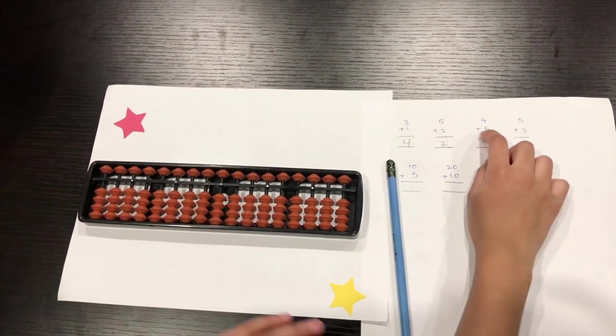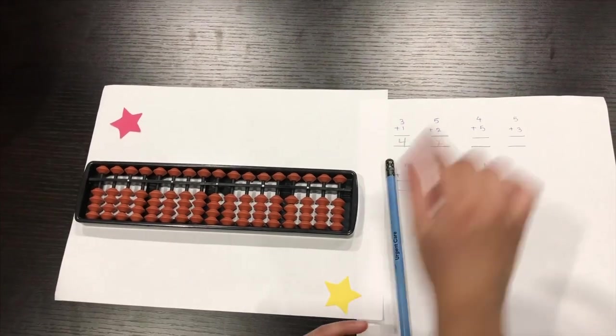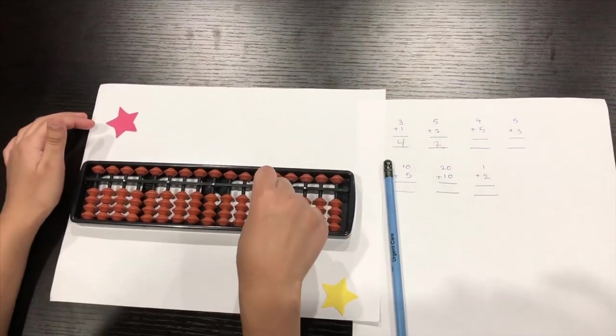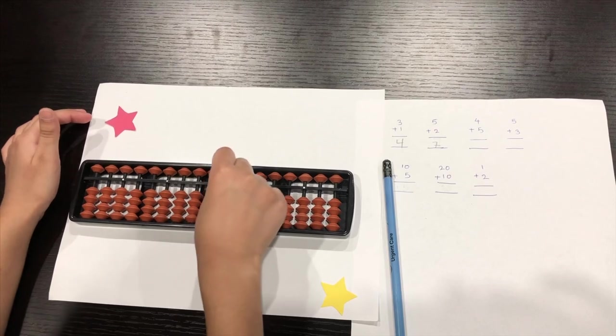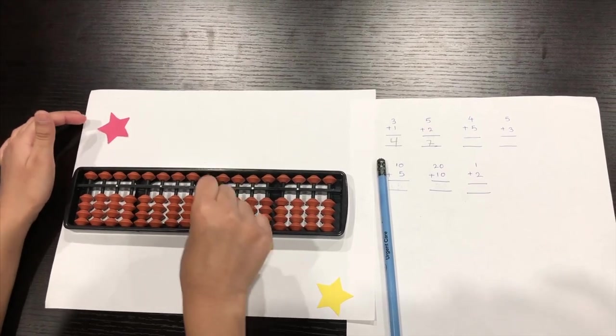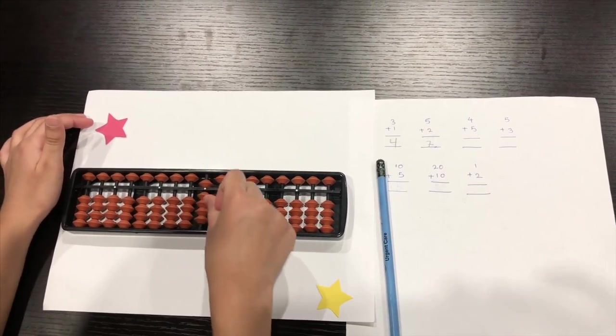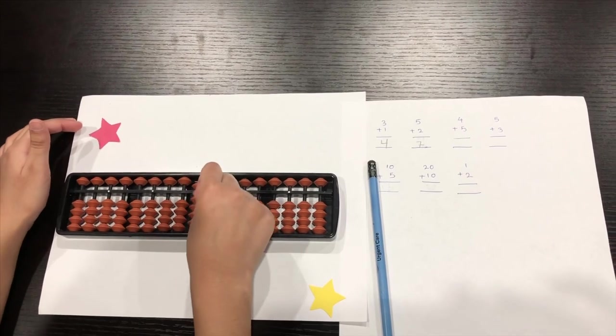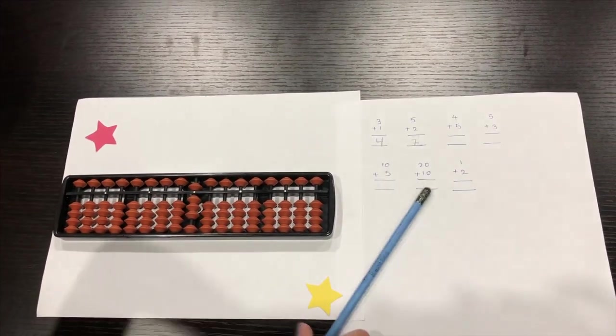So we're going to do our problem. So this problem, five plus four. Four, five. One, up for five. Four, one, two, three, four. Five, six, seven, eight, nine. So nine is the answer for this one.